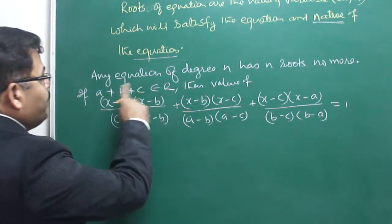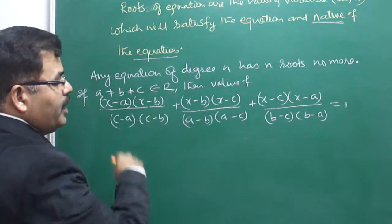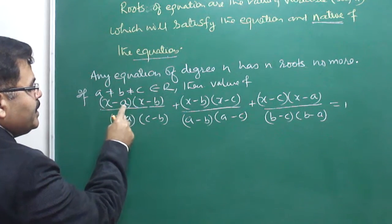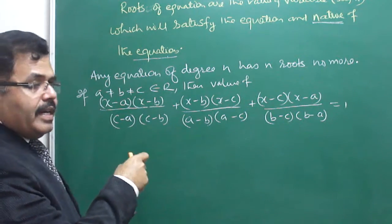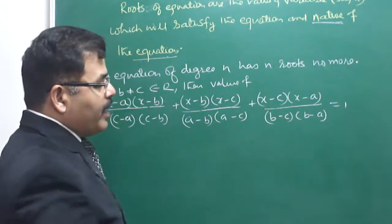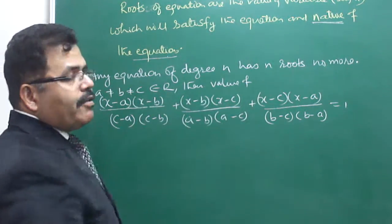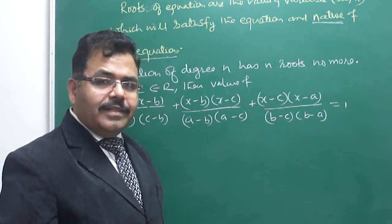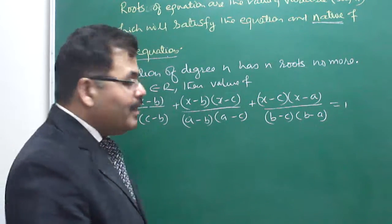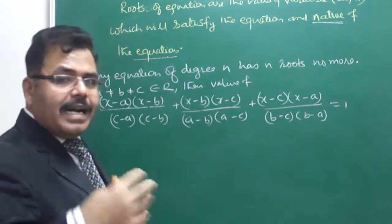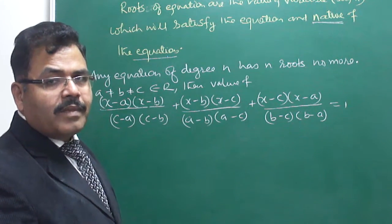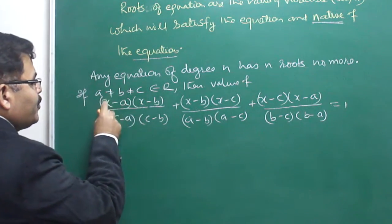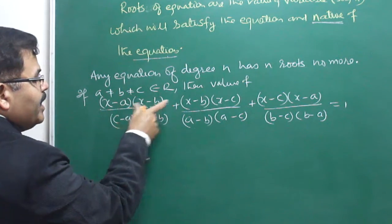Considering this example where a is not equal to b, not equal to c, and all of them are distinct real numbers. The expression (x-a)(x-b) turns out to be a quadratic equation. The sum of quadratic equations is also a quadratic equation. Overall, this is a quadratic equation because constants have no contribution to degree — the variable x squared determines the degree.